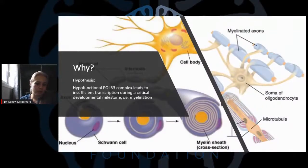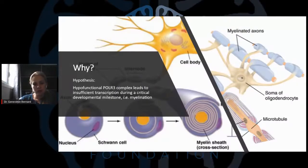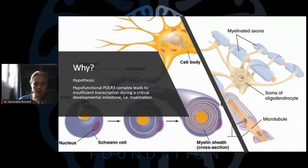Our general hypothesis, which we are working hard to prove, is that a hypofunctional POLR3 complex leads to insufficient transcription during a critical developmental milestone: myelination. Oligodendrocytes have to produce enormous amounts of transcription and translation during development because they have to expand their processes significantly, produce myelin, and wrap around nerve axons. This is why we think mutations in these genes — and other genes important for translation — lead to insufficient myelin deposition.